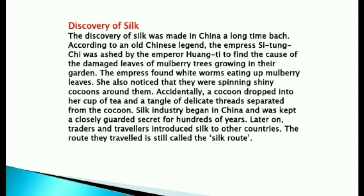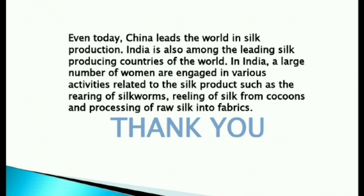Discovery of silk: The discovery of silk was made in China a long time back. According to an old Chinese legend, Empress Sheng Tung Chi was asked by Emperor Huang Ti to find the cause of damage to mulberry tree leaves in their garden. The Empress found white worms eating the mulberry leaves and noticed they were spinning shiny cocoons around themselves. Accidentally, a cocoon dropped into her cup of tea and a tangle of delicate threads separated from the cocoon. The silk industry began in China and was kept a closely guarded secret for hundreds of years. Later, traders and travelers introduced silk to other countries. The route they traveled is still called the Silk Route.